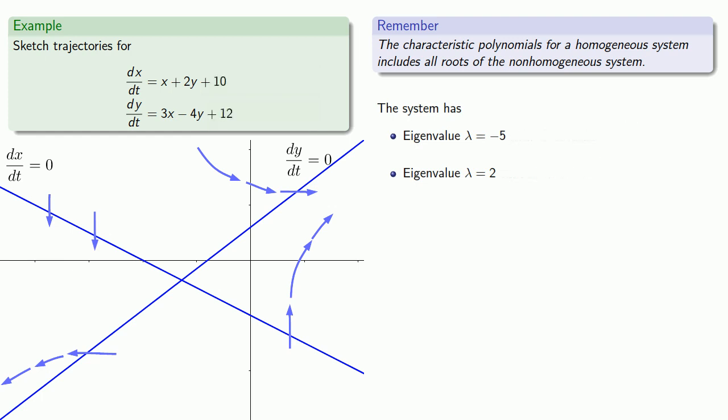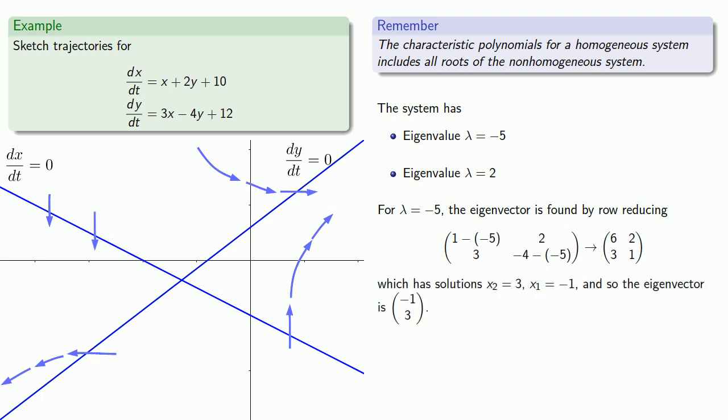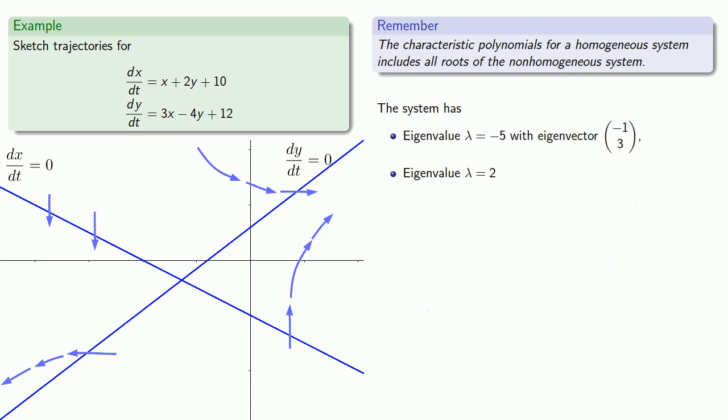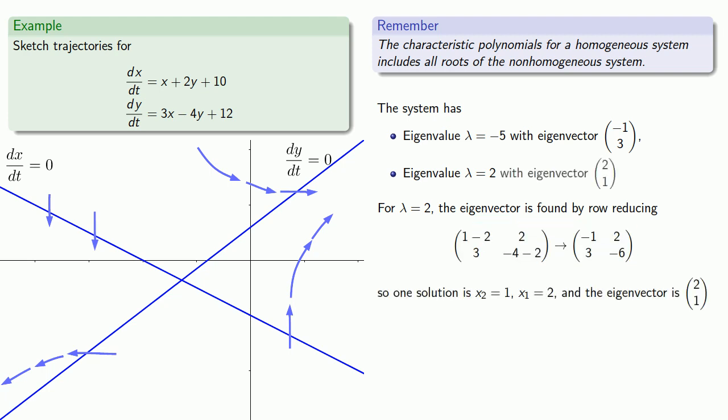For lambda equals minus 5, the eigenvector is found by row reducing, which has solutions x2 equals 3, x1 equals minus 1, and so the eigenvector is (-1, 3). And similarly, for lambda equals 2, our eigenvector is (2, 1).